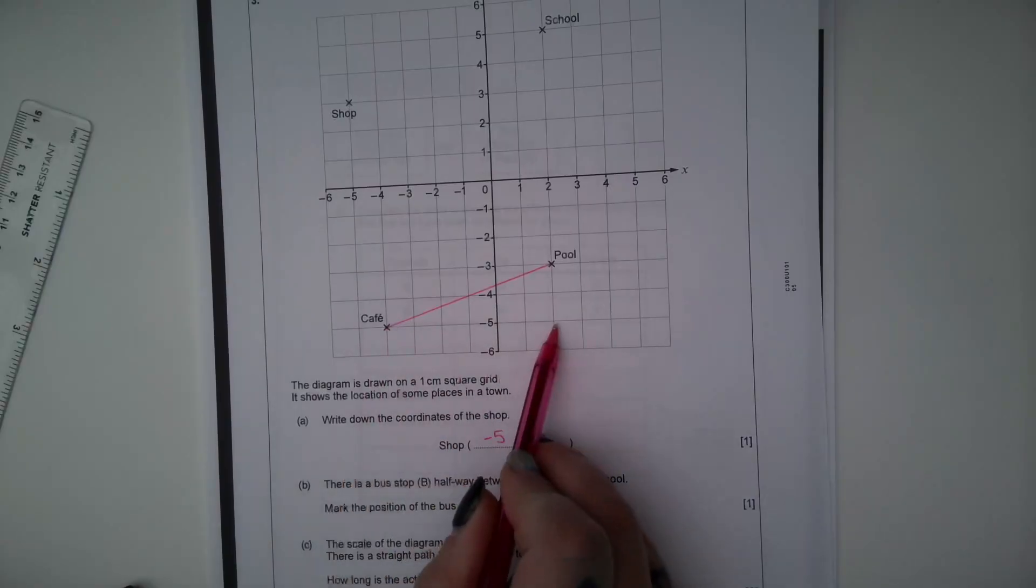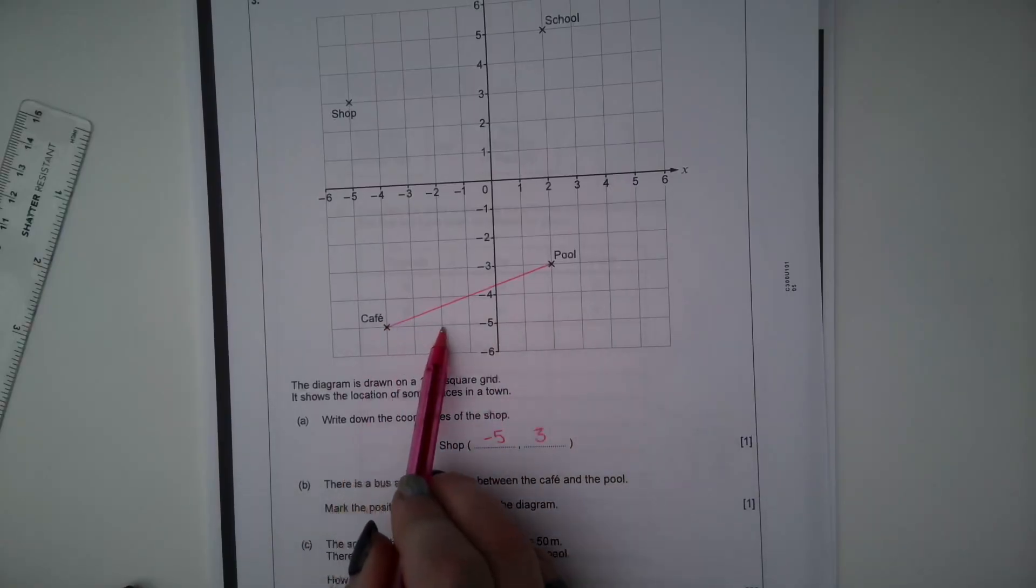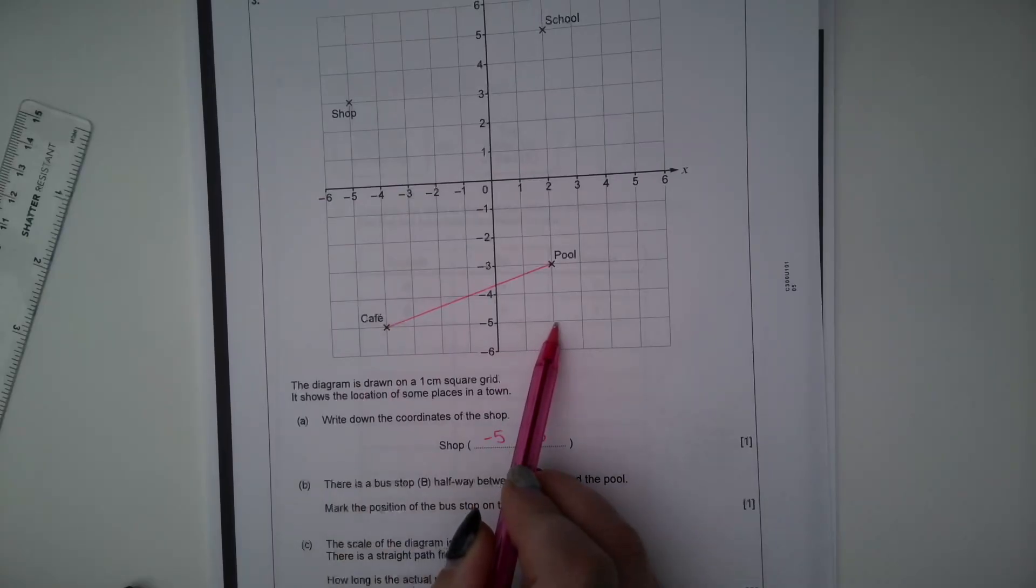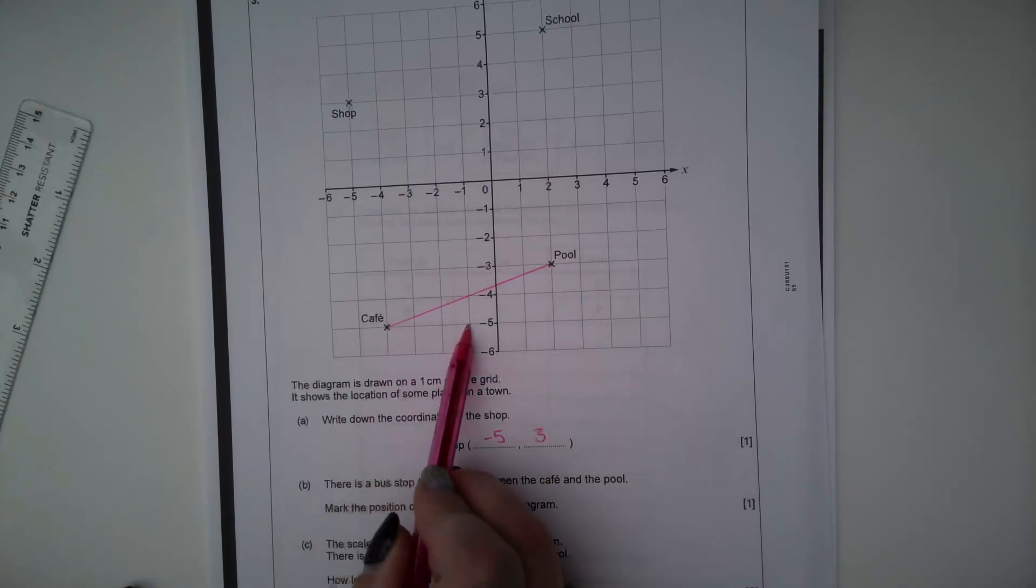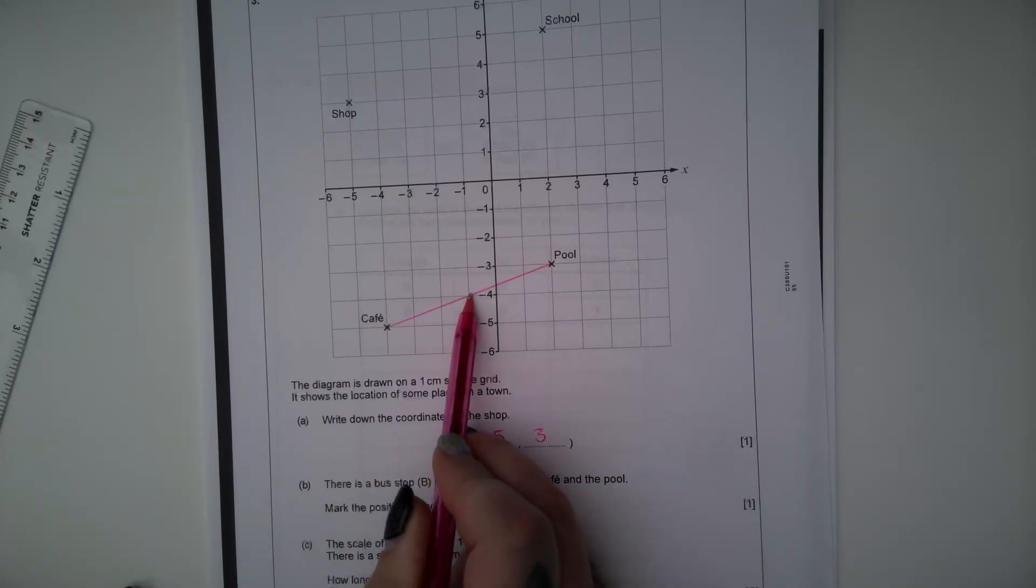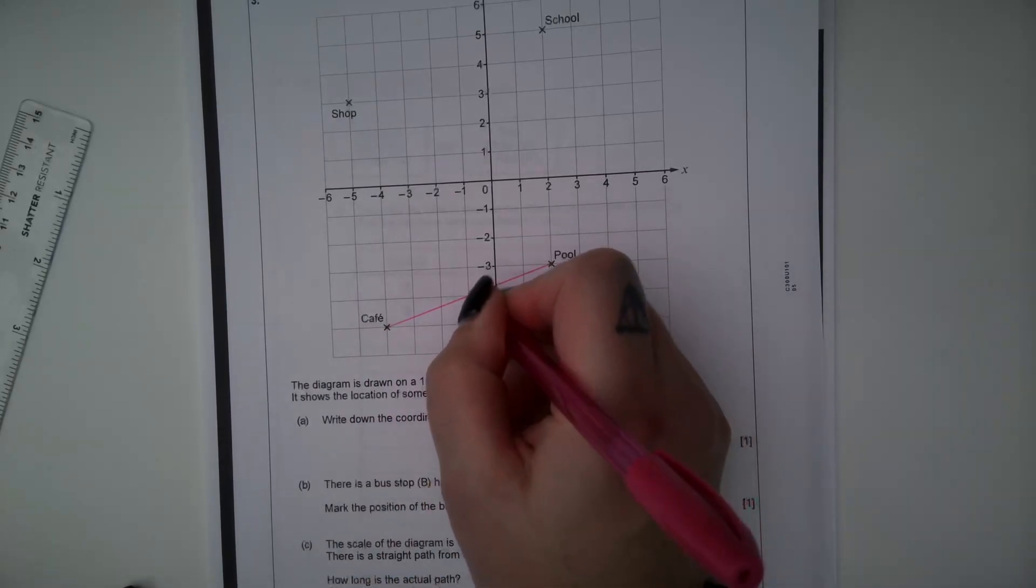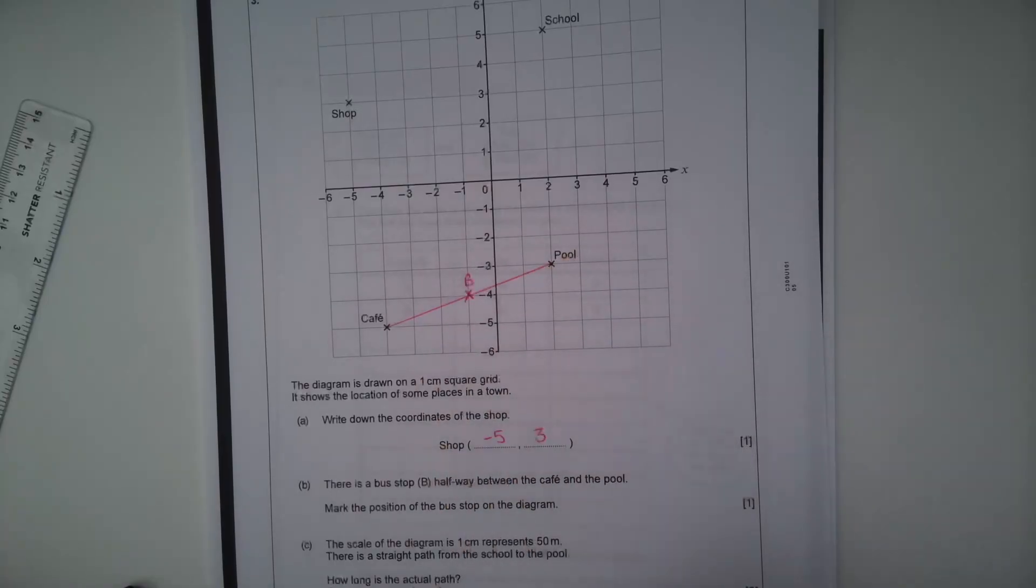Let's look at the horizontal distance. One, two, three, four, five, six horizontally and then one, two vertically. So the midpoint will be half of that distance. So it will be three horizontally and one vertically. So this is our midpoint, B, the bus stop.